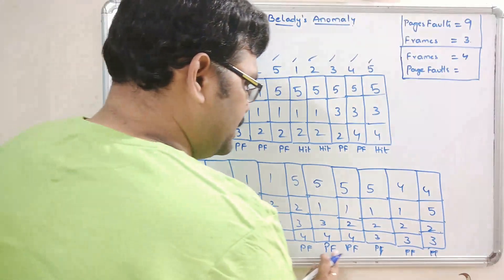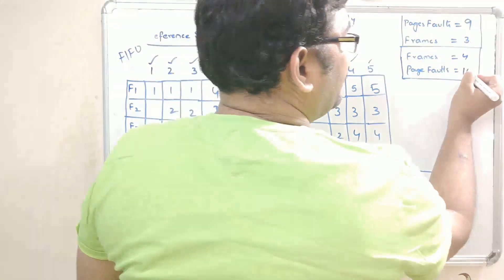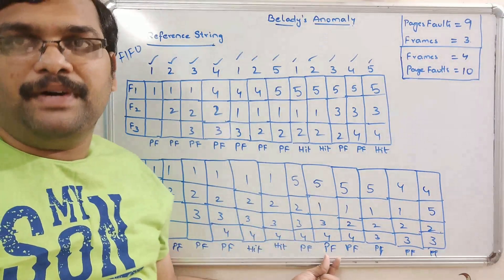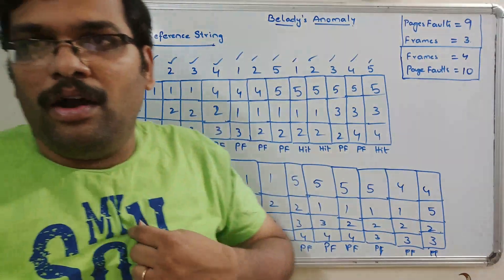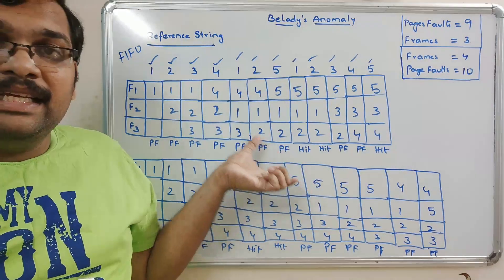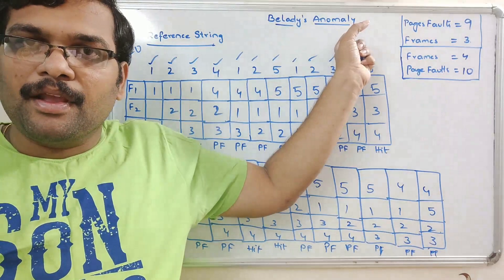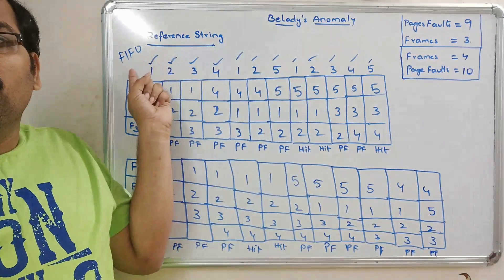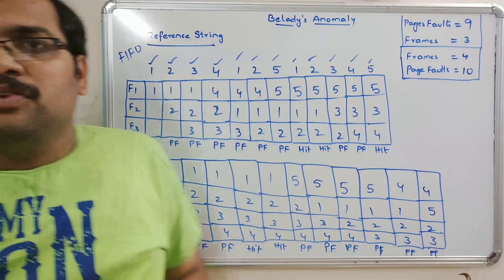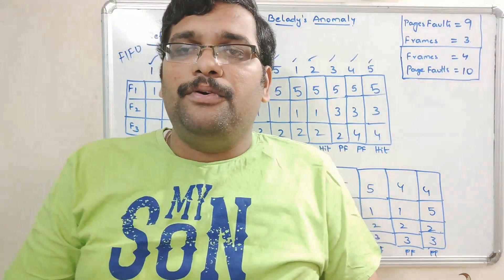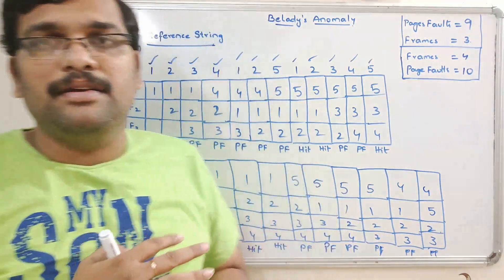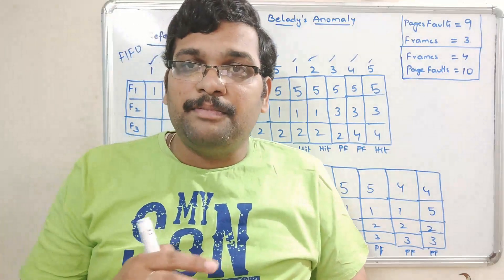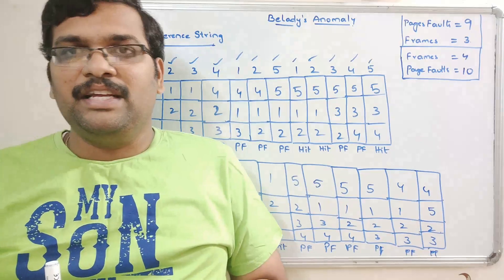Counting the page faults: 1, 2, 3, 4, 5, 6, 7, 8, 9, 10 — the page faults are 10 with 4 frames. Even though we increased the number of frames, the page faults actually increased from 9 to 10. This is Belady's Anomaly — in FIFO page replacement, increasing the number of frames may not decrease page faults; in some reference strings they can actually increase. Hope you understood Belady's Anomaly. Post any doubts in the comments, share with friends, and don't forget to subscribe. Thanks for watching!